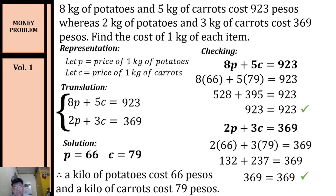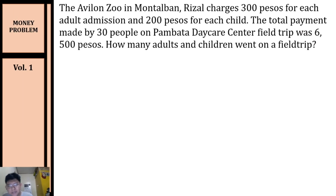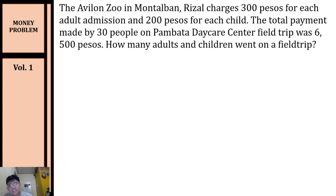Let's have another example. The Avalon Zoo in Montalban, Rizal charges 300 pesos for each adult admission and 200 pesos for each child. The total payment made by 30 people on a Pambata Daycare Center field trip was 6500 pesos. How many adults and children went on the field trip?